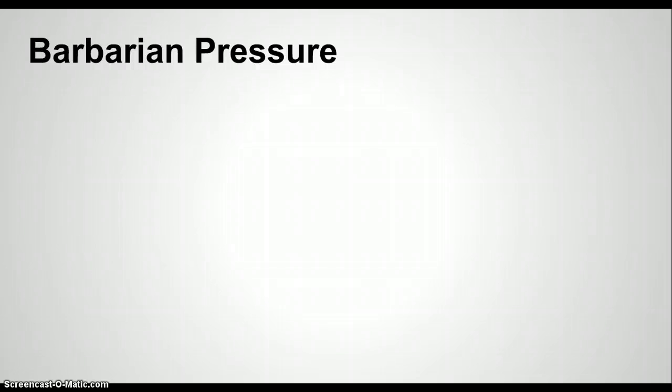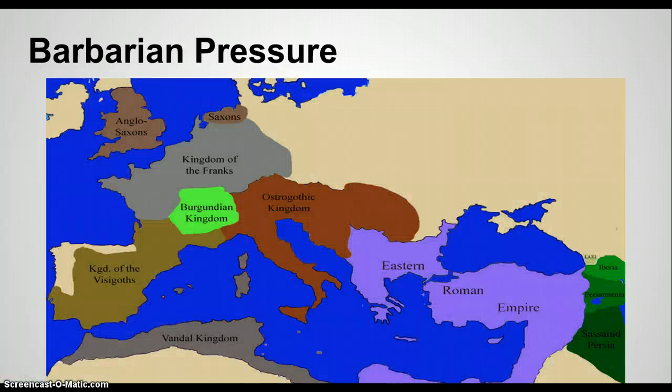When the barbarians were not getting the benefits that they had hoped for in the Roman Empire, they were not very pleased. Because of the prominent internal problems Rome was already faced with, different barbaric tribes rose up and gradually took over the Roman Empire until Rome had nothing left.